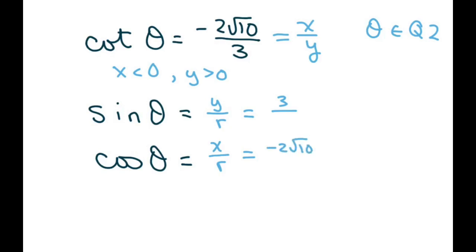So we have negative 2 square root of 10 squared plus 3 squared equals r squared. Now this is 4 times 10 is 40 plus 3 squared is 9 equals 49. So square root of 49 is 7. And r is always positive.